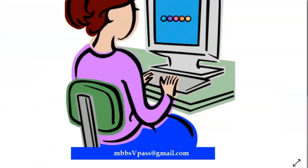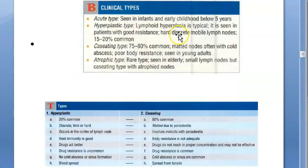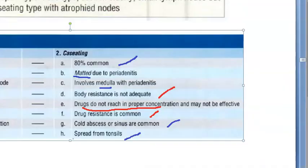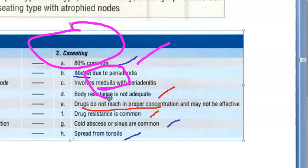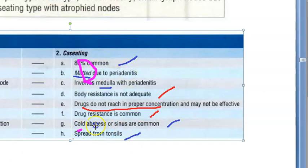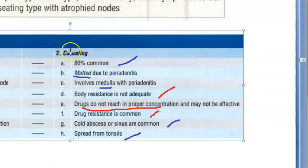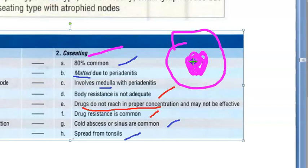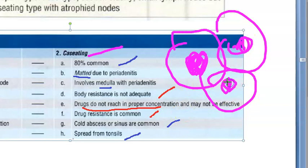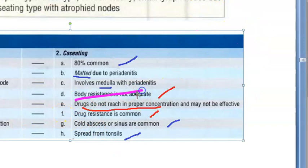There are clinical types: acute type, hyperplastic, caseating, and atrophic. Caseating is the most common type. In caseating, the medulla is affected, there will be matting of lymph nodes, and drugs either don't reach in proper concentration, there may be drug resistance, or the body's resistance is not adequate. It is seen in young adults.